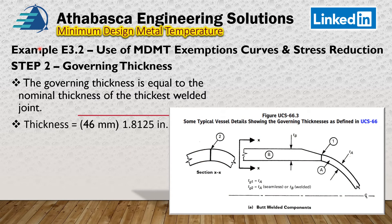The next step is to look at the governing thickness of the part to figure out what the thickness is so we can apply it to the UCS curve. We go through a series of figures. In this case, we have a shell connecting to a head, and by the rules we take the thickness of this weld, which is 46 millimeters.